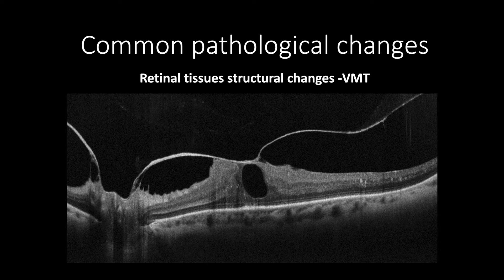This cross-section of VMT shows perifoveal posterior cortical vitreous detachment with central adhesion of the posterior cortical vitreous causing anterior-posterior oblique traction, inducing increased retinal thickness and cystic formation along with disruption of the ellipsoid zone.